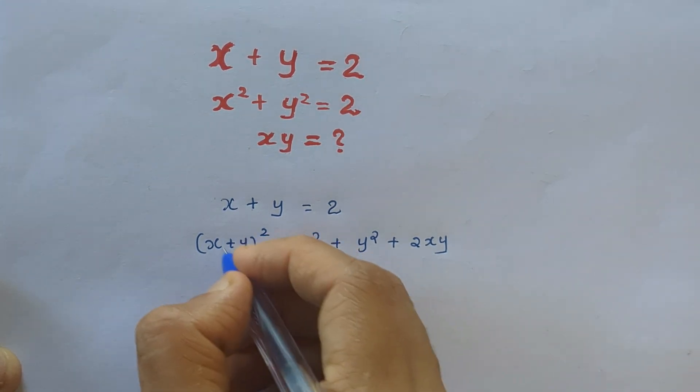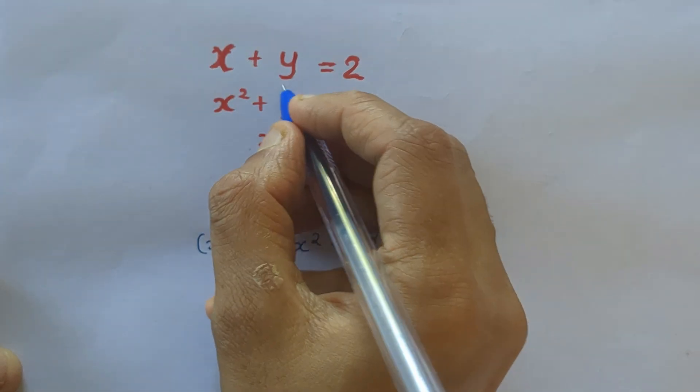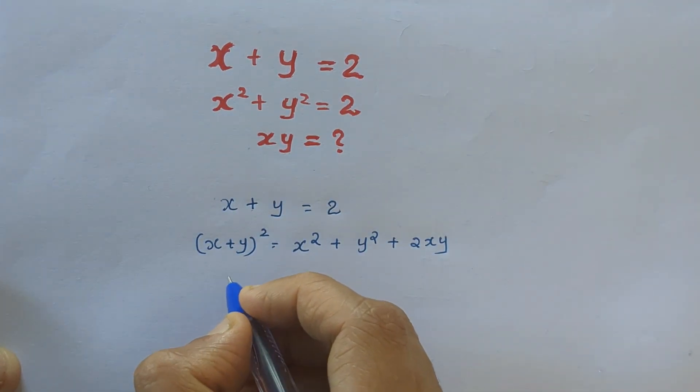that is x square plus y square plus 2xy, right? Here we have the value of x plus y, what is it? It is 2.